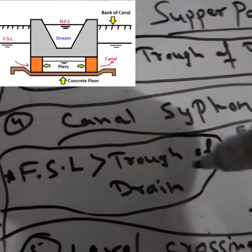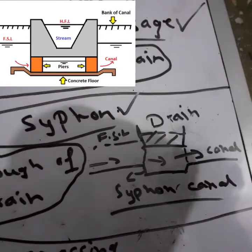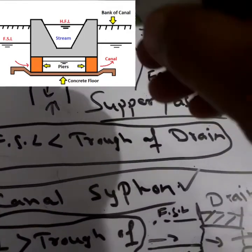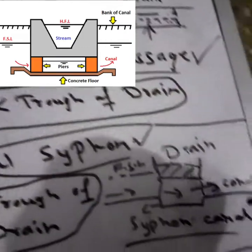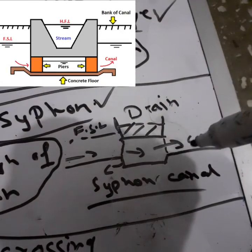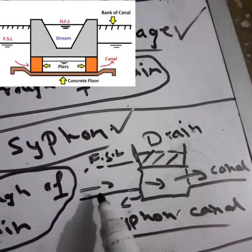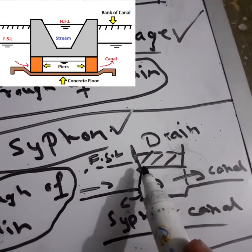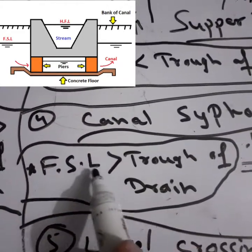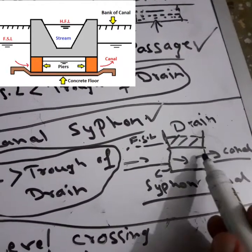The fourth type is the Canal Siphon. The difference from Super Passage is that here the FSL level of the canal is above the trough of the drain. In the cross-section, you can see the drain above and the canal flowing under the drain. The canal FSL level is greater than the trough of the drain — FSL > trough of drain. This creates a siphonic action.